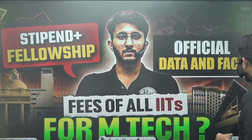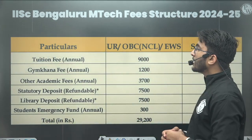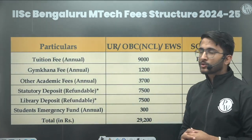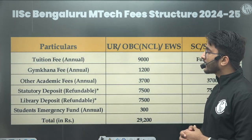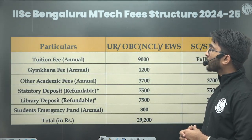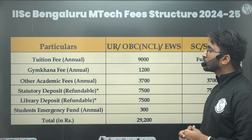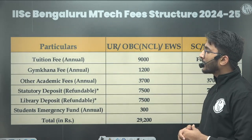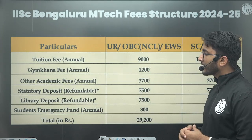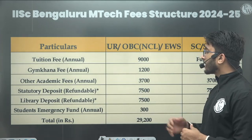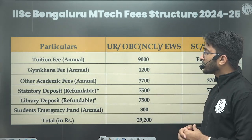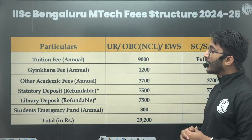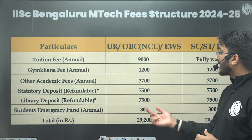First of all, if we discuss about IISC Bengaluru — IISC Bengaluru is the dream college of lots of students after clearing the GATE examination. The tuition fees is ₹9,000, Gymkhana fees is ₹1,200, other academic charges are ₹3,700, statutory deposit is ₹7,500, library deposit is ₹7,500, and the student emergency fund is ₹300.